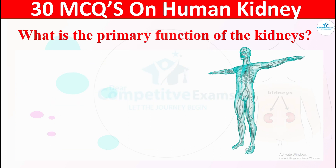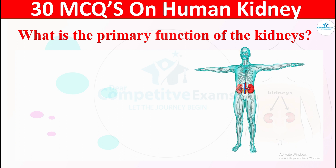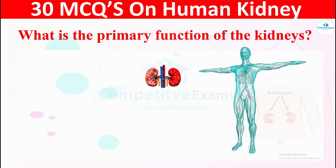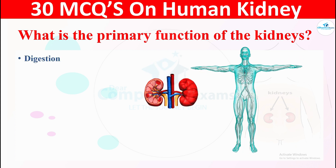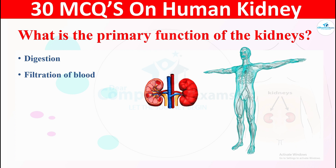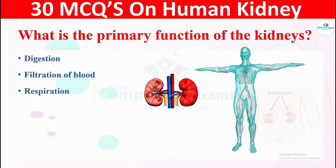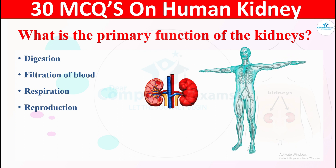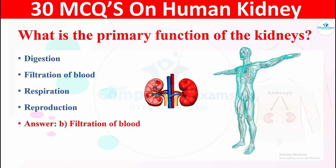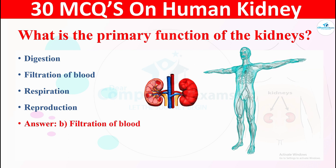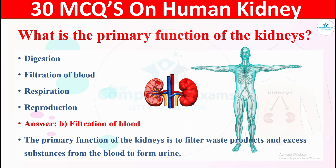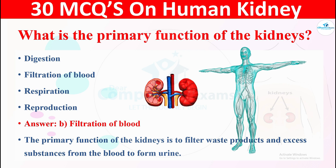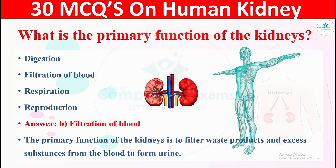Question 1: What is the primary function of the kidneys? The options are: A) digestion, B) filtration of blood, C) respiration, or D) reproduction. The correct answer is B, filtration of blood. The primary function of the kidneys is to filter waste products and excess substances from the blood to form urine.